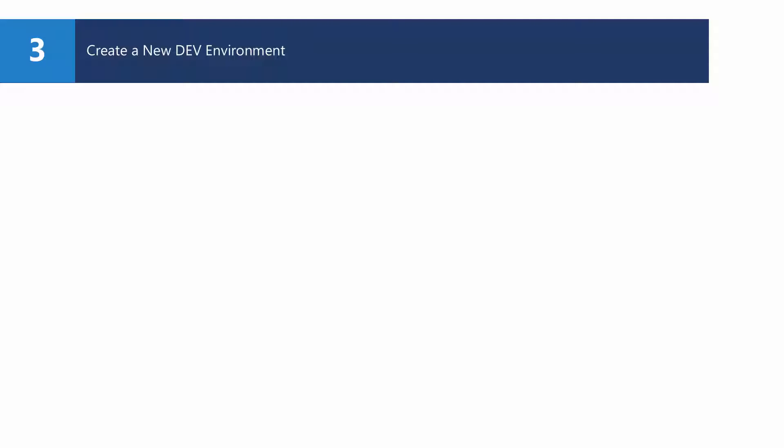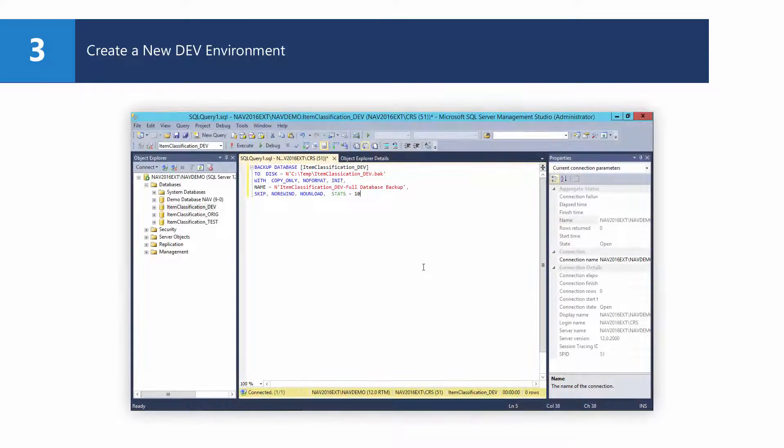To show you a dependent extension, we need to create an additional one, which means we need to create a new development environment for this new extension. Creating a development environment for an extension has been explained in the video 'How do I build my own development environment for starting to develop Microsoft Dynamics NAV extensions.' Since we're creating an extension dependent on the already created item classification extension, the new dev environment needs to contain the developed database of the item classification extension.